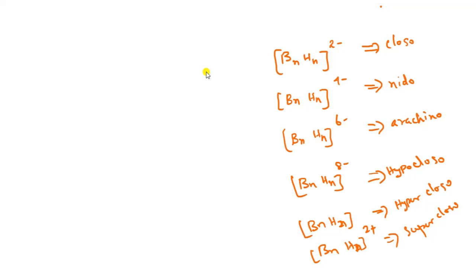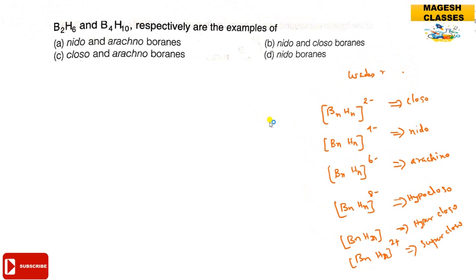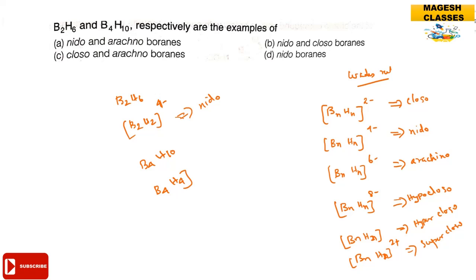This is the basic borane-type structure classification based on Wade's rules. The given B2H6 can be written in the form B2H2 with 4 minus, which is nido type. And B4H10 is B4H4 with 6 minus, which is arachno type. So the answer is A.